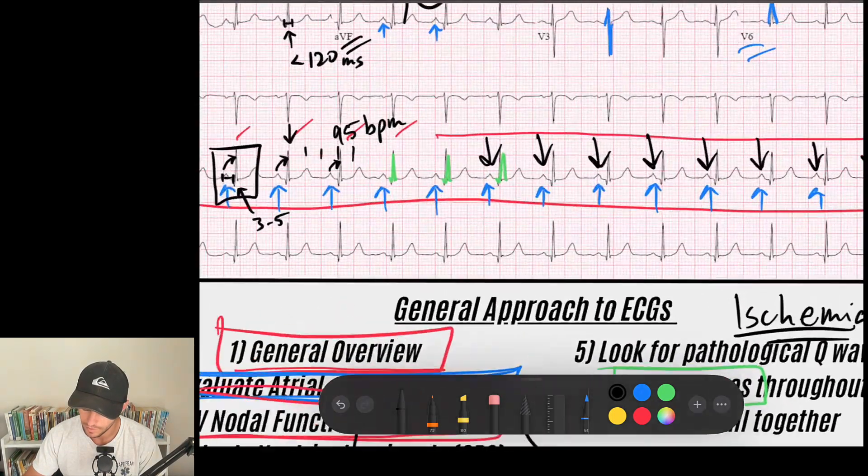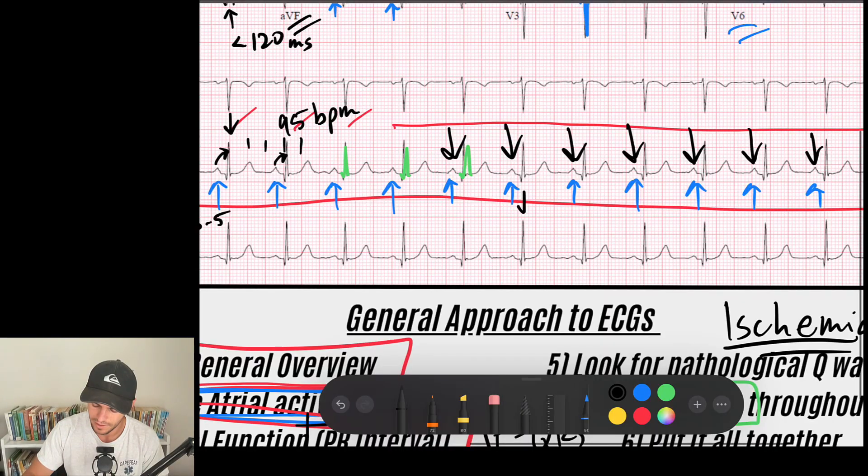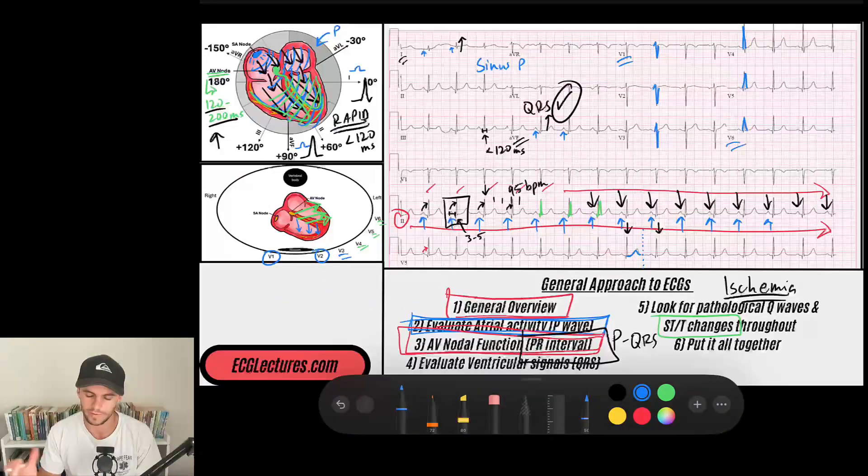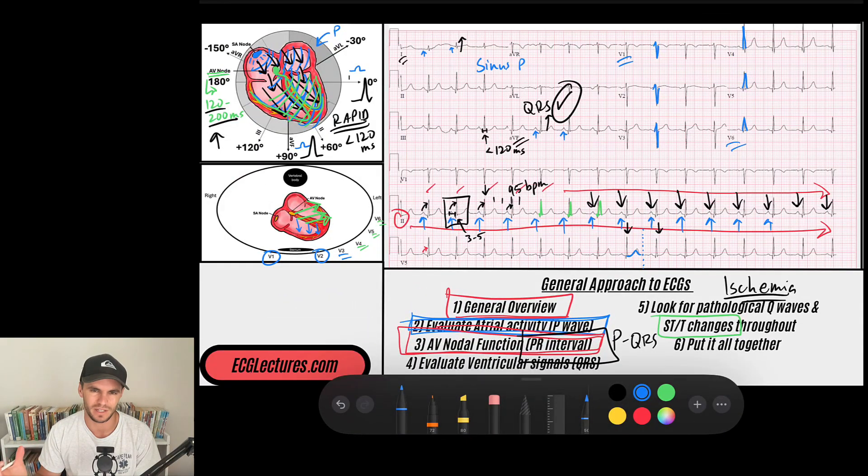So we're going to look at our QT interval. First thing I'm going to do is I'm looking at my QT interval. I like the eyeball test, meaning I find a QRS here, a QRS here. I know that if I draw a line midway through these QRSs, my T wave should end by the midline point, which it does. So that's my eyeball test for the QT interval because remember we have to correct it for the rate. It's a rate dependent interval. It's an interesting concept.